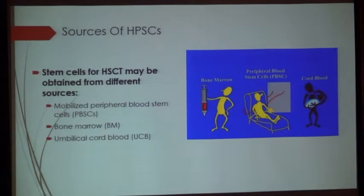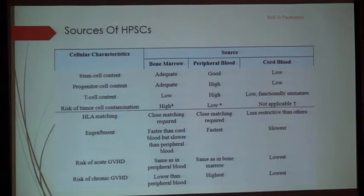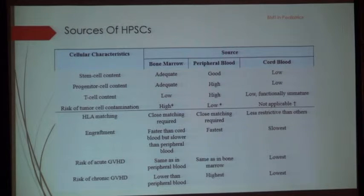Hematopoietic stem cells can be collected from different sources: mobilized peripheral blood stem cells using granulocyte colony-stimulating factor, bone marrow, or umbilical cord blood. Bone marrow offers adequate cell numbers, low T-cell content, fast engraftment, and the lowest risk of GVHD. Peripheral blood use is good but carries a higher risk of chronic GVHD. Cord blood has the lowest risk of GVHD but a higher rate of graft failure and delayed engraftment.